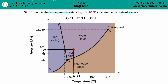X marks the spot — right at the intersection, it falls in the light purple region, which means water would be in the liquid phase. And that is the answer to this question — not bad, just using a graph!